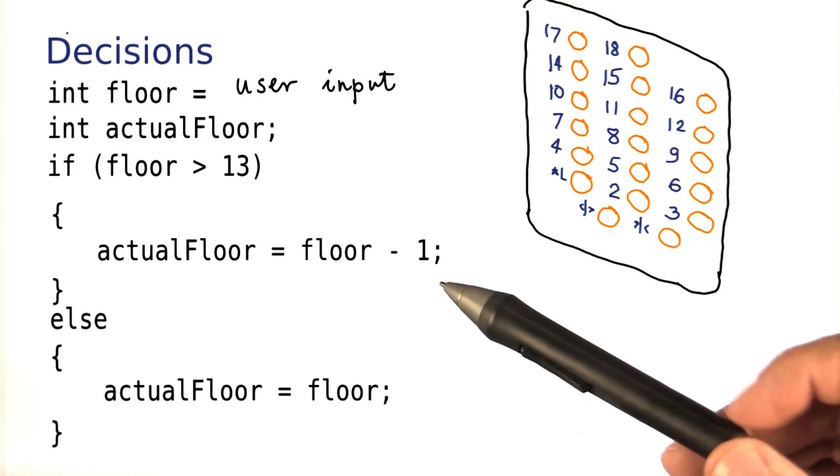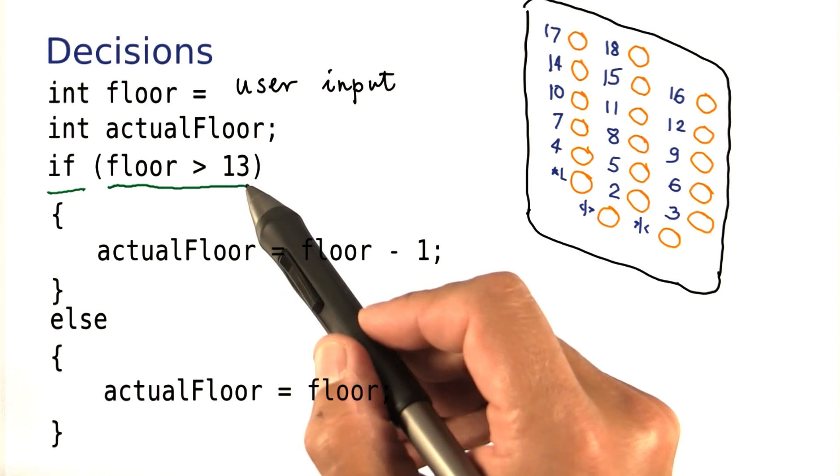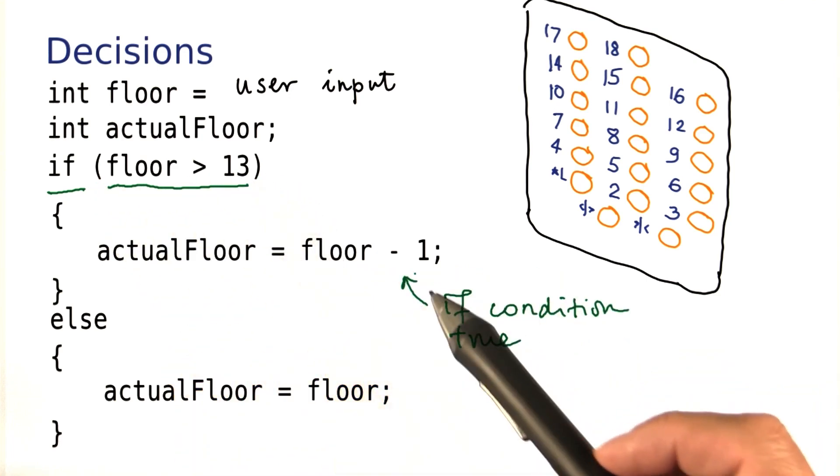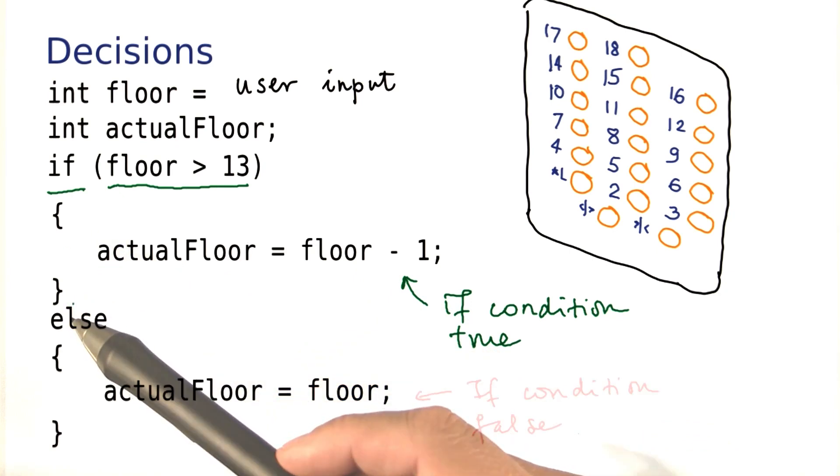Let's go over the important parts again. The keyword if starts out the conditional statement. The condition goes in here and is surrounded by parentheses. If the condition is true, then the part following the if is executed. And if the condition is false, then the part after the else clause is executed.